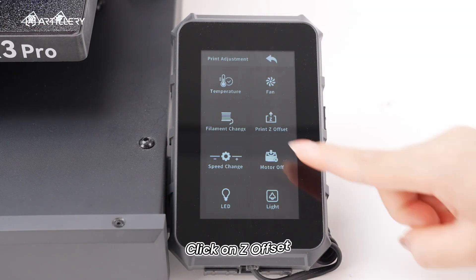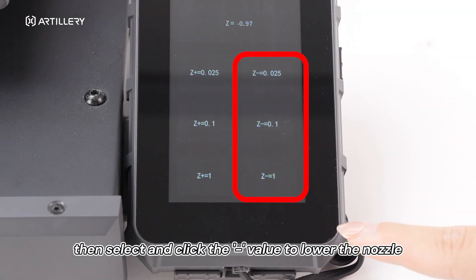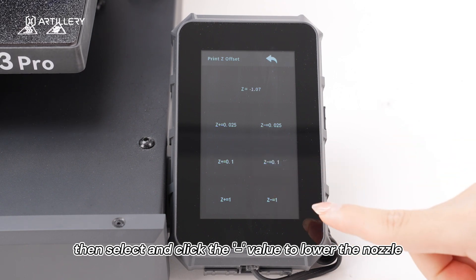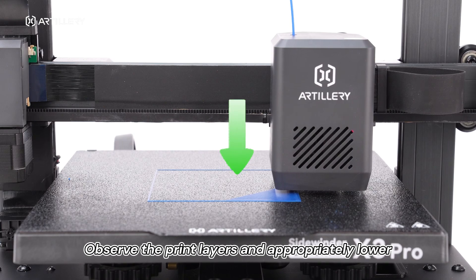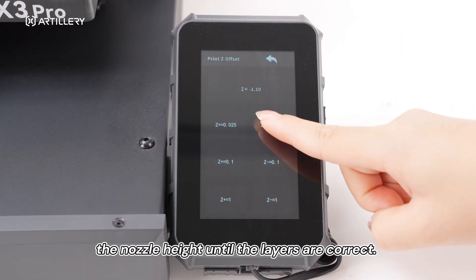Click on Z-Offset, then select and click the minus value to lower the nozzle. Observe the print layers and appropriately lower the nozzle height until the layers are correct.